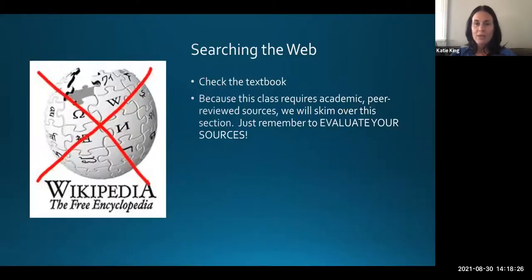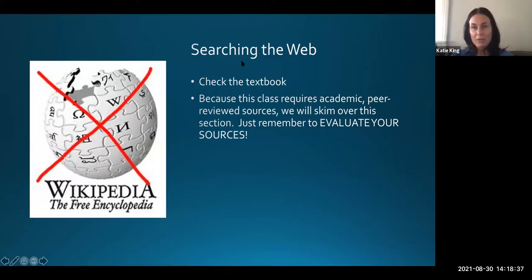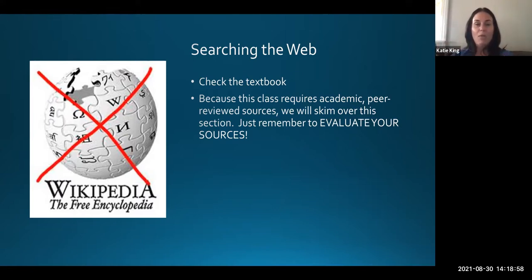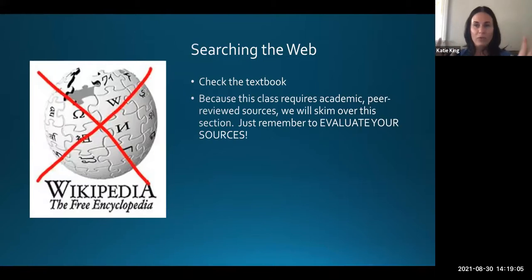So just remember to evaluate your sources. Because this class requires academic peer-reviewed sources, avoid Wikipedia and avoid Google at all costs. Just like encyclopedias can be a great jumping-off point, Wikipedia is a decent jumping-off point to give you ideas about your subject matter and a general overview, but it should not be used as a source in your essay. I think most of us get that at this point, so I won't belabor this.